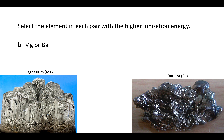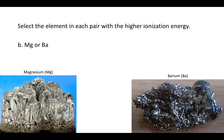How about magnesium and barium? Which one is it harder to rip an electron away from? In other words, which one has a higher ionization energy? Magnesium is here, barium is just below it.